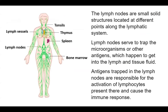Lymph nodes are small solid structures located at different points along the lymphatic system. They serve to trap microorganisms or other antigens that get into the lymph and tissue fluid. Antigens trapped in lymph nodes are responsible for the activation of lymphocytes present there, causing an immune response.